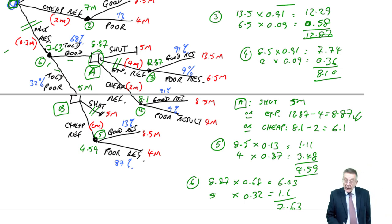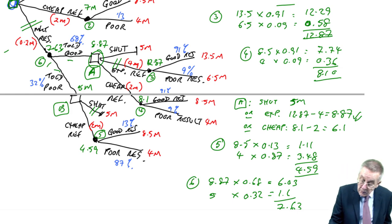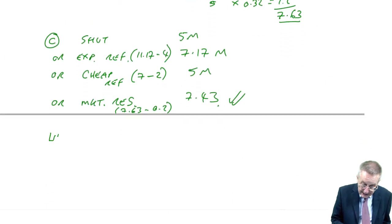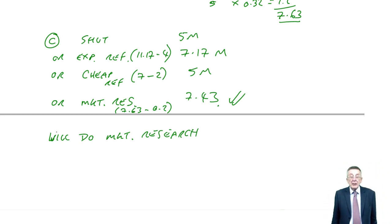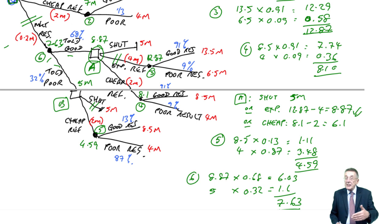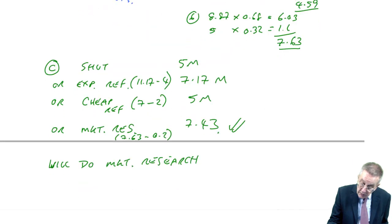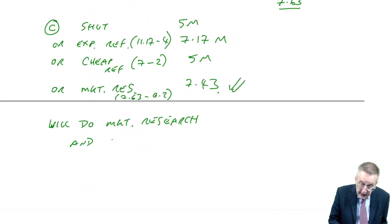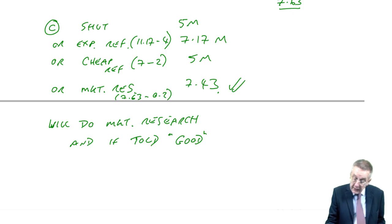And so there we are. Although strictly the full answer is this. We will do market research. I hope you're clear why. But remember, because we're doing market research, there is another decision will have to be made later, depending on what they tell us. And they give us two answers. So if they, if we're told good, then what would the decision?